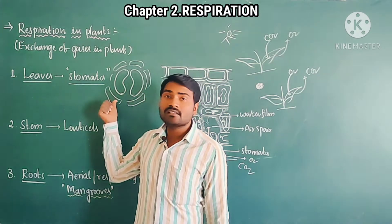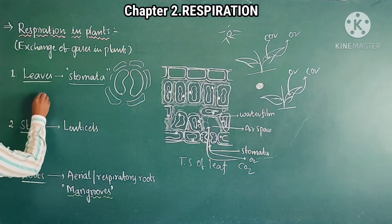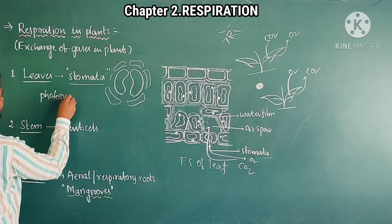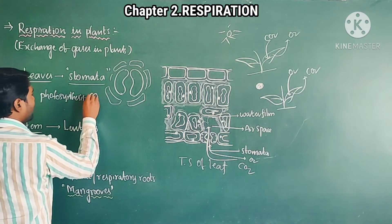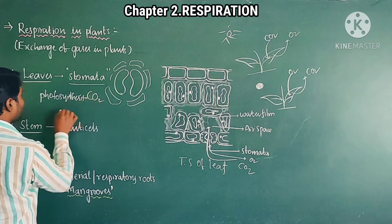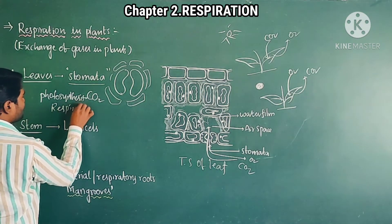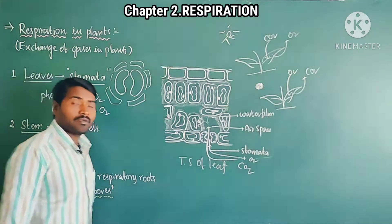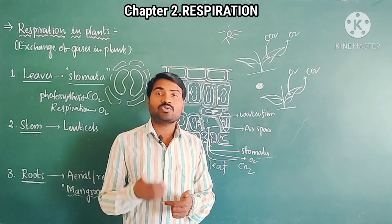The structures present on leaves are stomata. In photosynthesis, the plant takes CO2. Whereas in respiration, it takes oxygen. In this way, exchange of gases takes place through stomata.